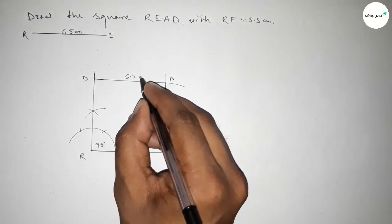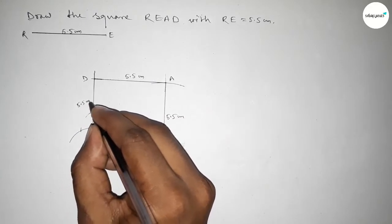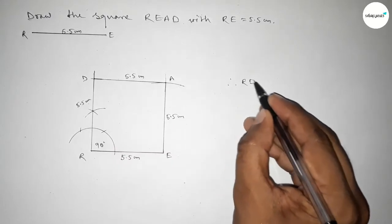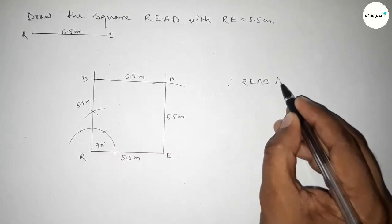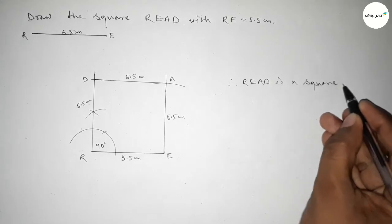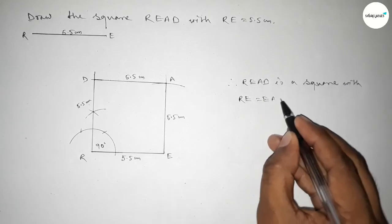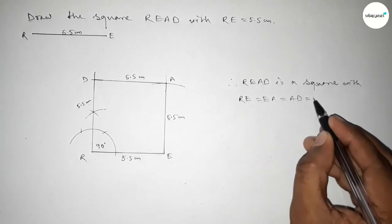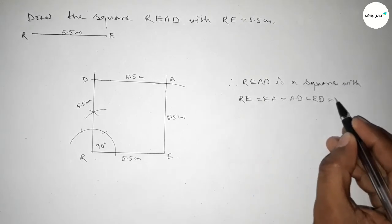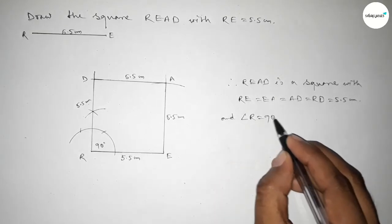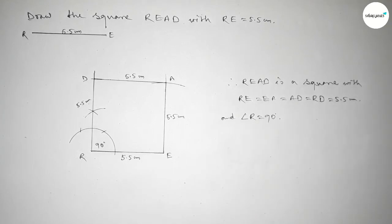All sides are equal to 5.5 centimeters. Therefore, READ is a square with each side 5.5 centimeters. This is the process to construct a square READ with each side 5.5 centimeters. That's all — thanks for watching. If this video was helpful, please share it with your friends, and like, comment, and share.